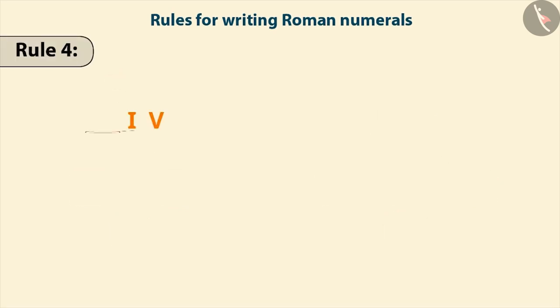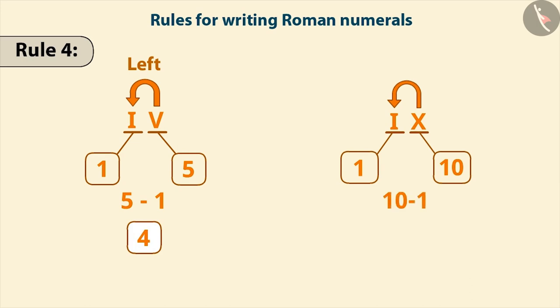Similarly, if the symbol of smaller value is written to the left side of the symbol of larger value, then the smaller value is subtracted from the larger value. Just like subtracting 1 from 5 gives the number 4 and subtracting 1 from 10 gives the number 9.